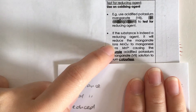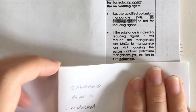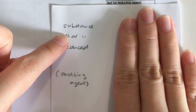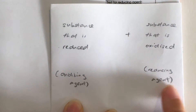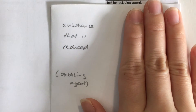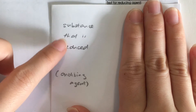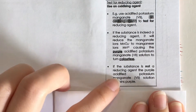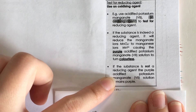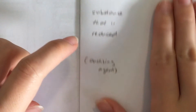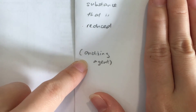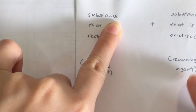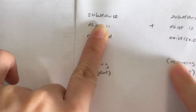If potassium permanganate gets reduced, it will turn from purple to colorless. If it turns from purple to colorless, it has been reduced and the reducing agent is present. If potassium permanganate remains purple, it did not get reduced, which means there is no reducing agent present.